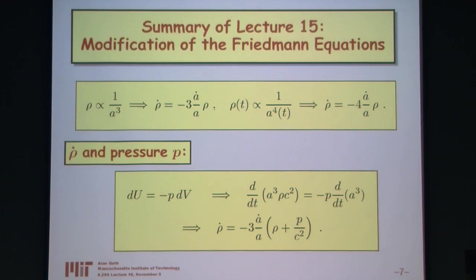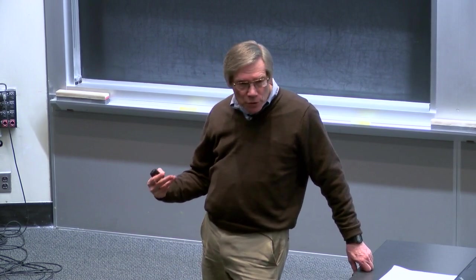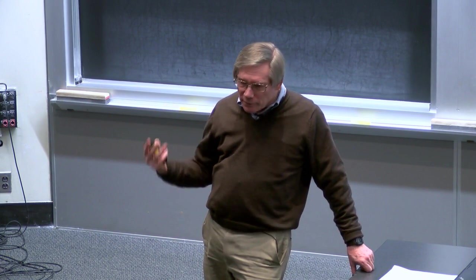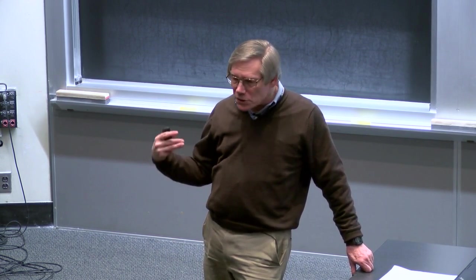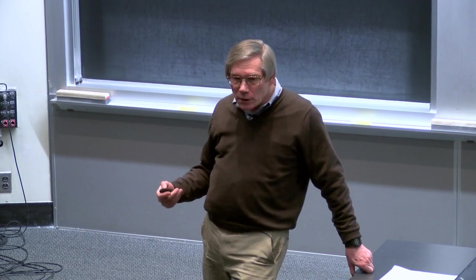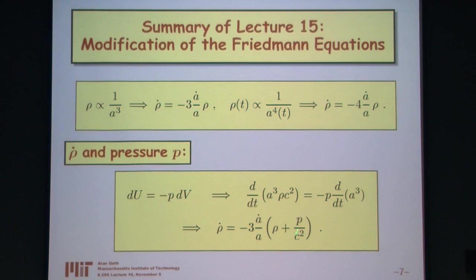For a gas of non-relativistic particles, the pressure is negligible. But for radiation, if we're going to get a factor of 4 instead of 3, the pressure will be non-negligible. In fact, this implies that the pressure is exactly equal to one-third of the energy density for a gas of radiation.